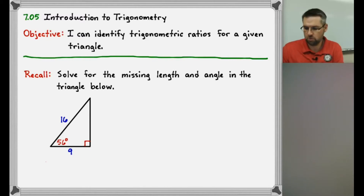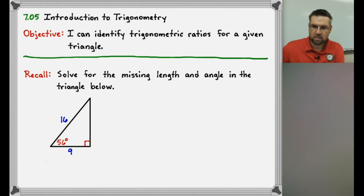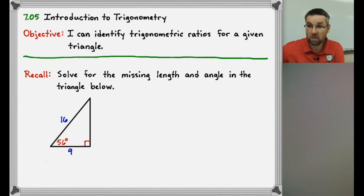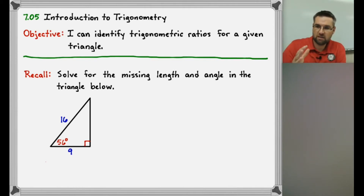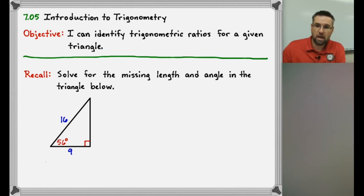Hey everyone, welcome to lesson five of unit seven. This unit is all about trigonometry. Now that's a big word — trigonometry. We're gonna break that down for you in just a second. But we have gone through this idea of finding the missing side lengths of a right triangle, the missing angles of a right triangle, and how to compare two triangles that are similar so that you can find missing side lengths.